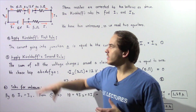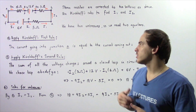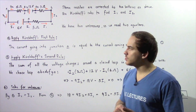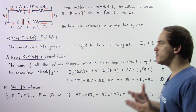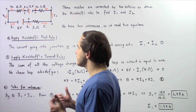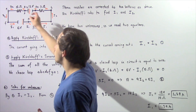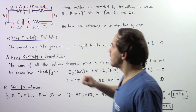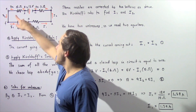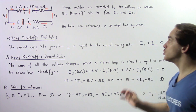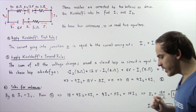Let's examine the following electric circuit and use Kirchhoff's rules to solve for electric currents I1 and I2. We essentially have an electric circuit that consists of two batteries: one battery has an EMF of 6 volts and the second battery has an EMF of 12 volts. We also have three resistors: a 5 ohm resistor, a 3 ohm resistor, and a 6 ohm resistor.